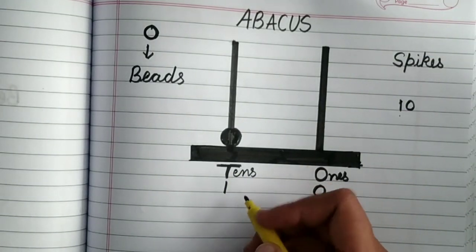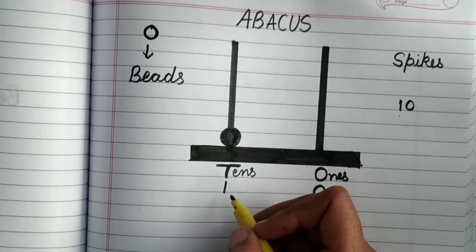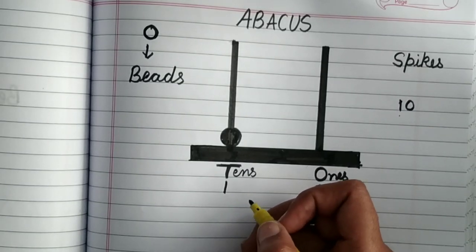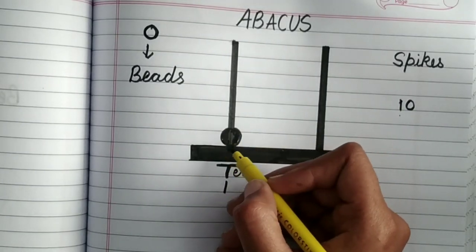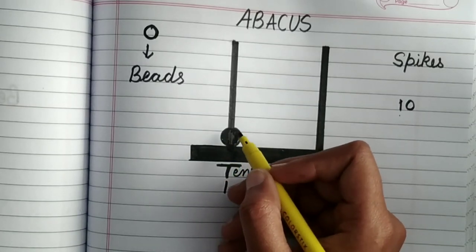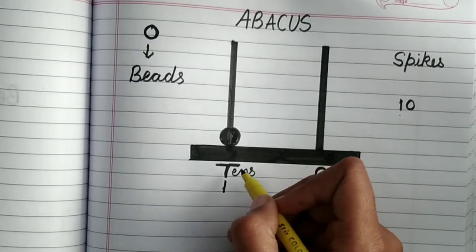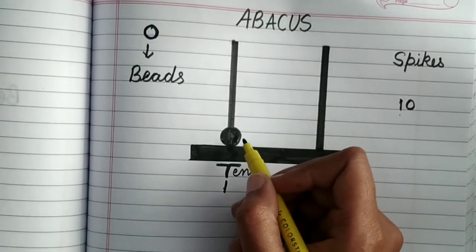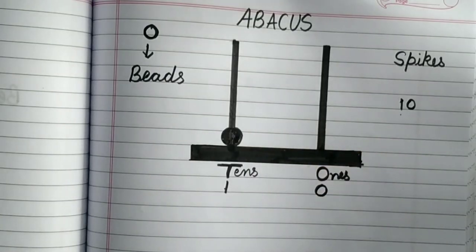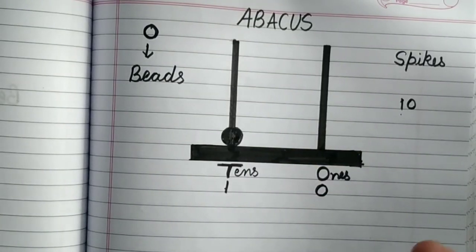Similarly, in tens, it is written one over there. That means how many beads I have to make? One. That means one bead I have to make. What it represents? There is that there is one tens. There is one tens. Or I can say one packet of ten candies.